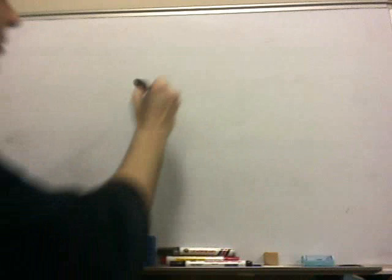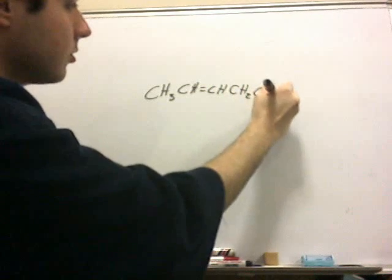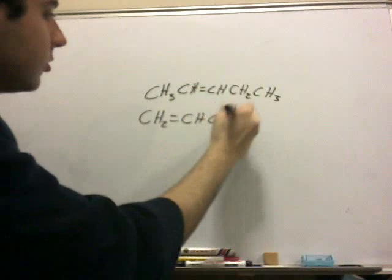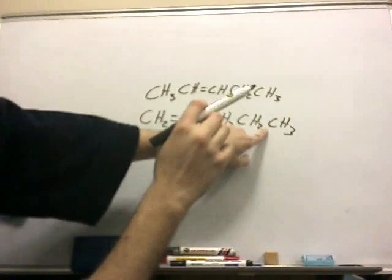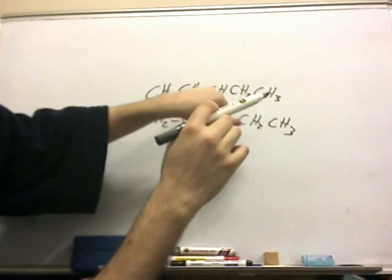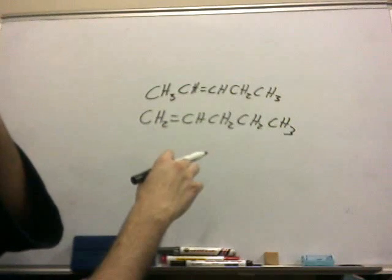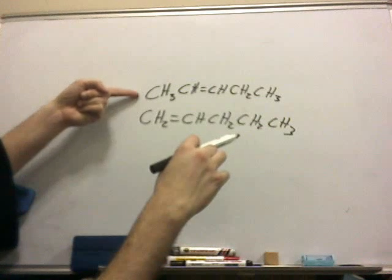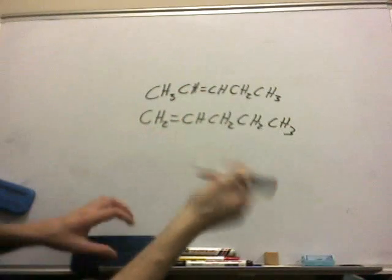Same thing with pentene. If I have CH3, CH, double bond, CH, CH2, CH3, I can have at least, let's see, here's another one, CH2, double bond, CH, CH2, CH2, CH3. If I put the double bond here, it's the same as this one, and if I put it here, it's the same as this one. So I can have two different isomers of this molecule. Later on, we're going to talk about which one's more stable. Obviously, for your reference, this top one is more stable and will probably be the majority of the synthesis reaction. But we're not going to talk about stability or cis and trans today, we're just going to talk about the basic nomenclature.